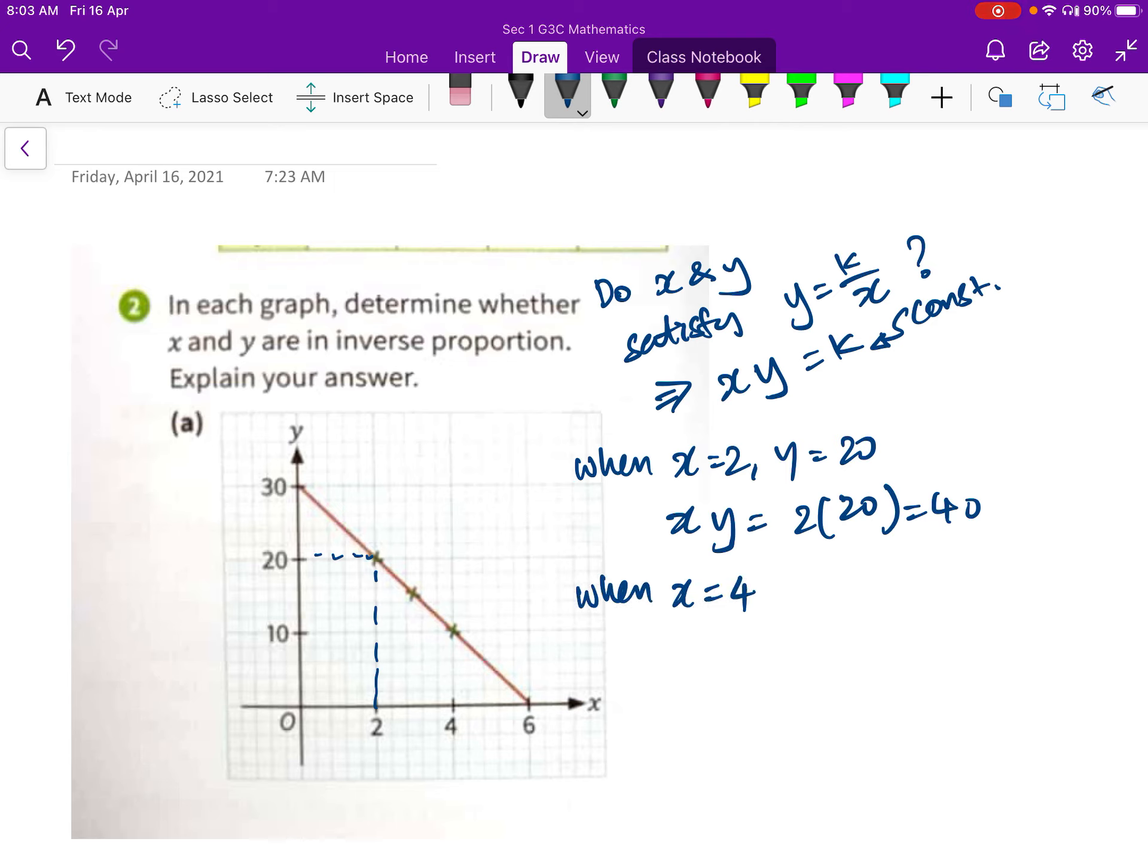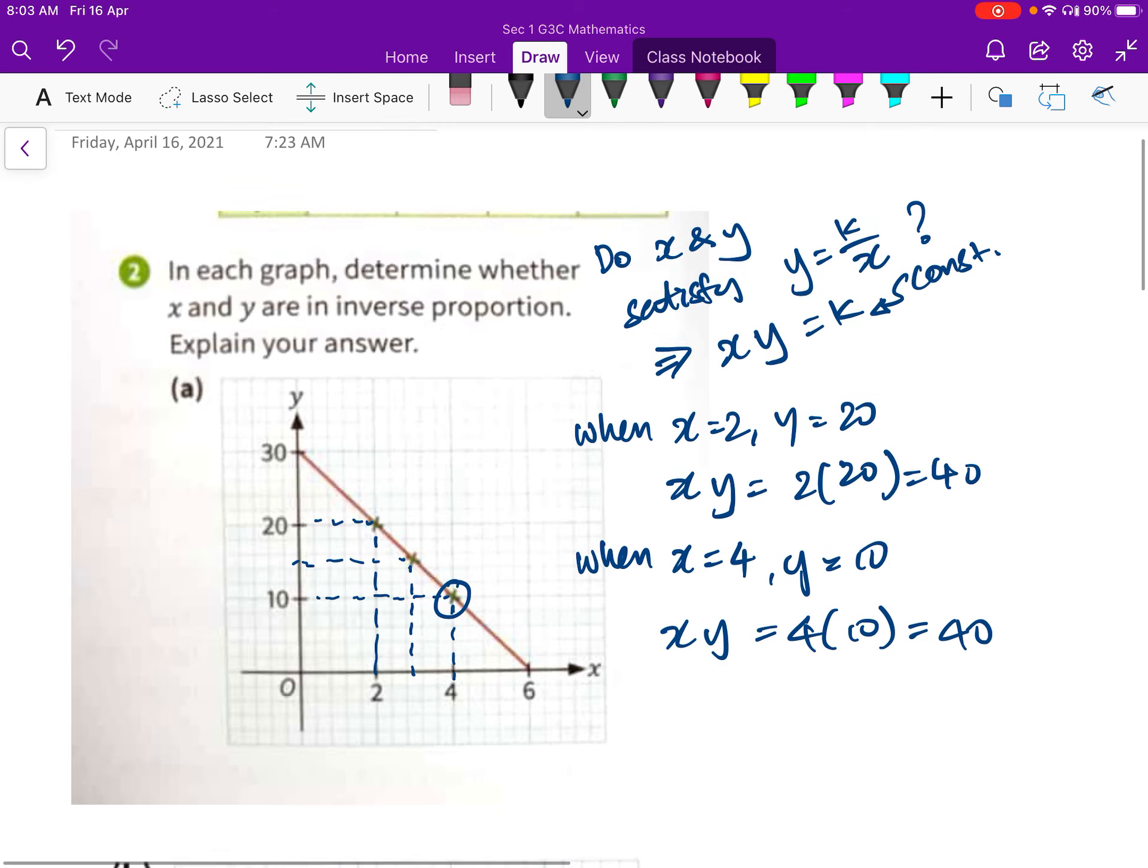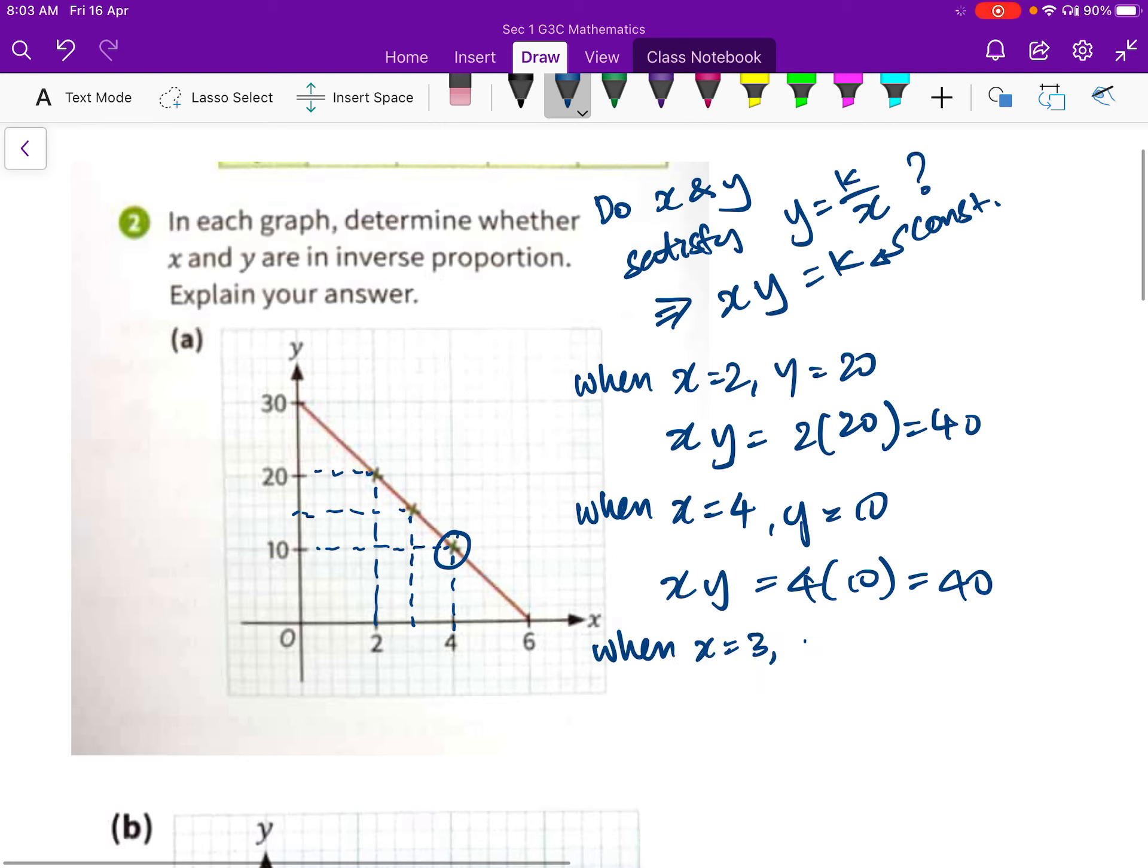So let's try the next set. When X equals to, for example, 4, Y equals to 10. So X times Y equals to 4 times 10, which gives me 40. Looks like it is a constant. How about the next? I was hoping that the last set of coordinates would give me a value that is different. Let's try the next one. When X equals to 3, Y equals to 15. X times Y, 3 times 15, and we get 45, which is not equal to 40.